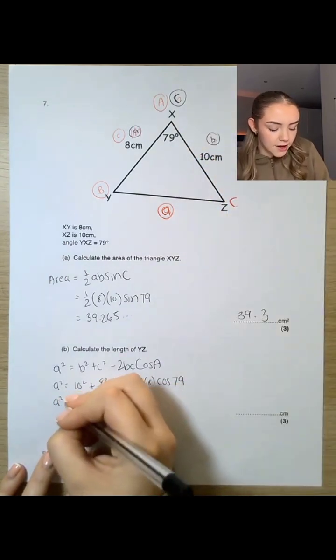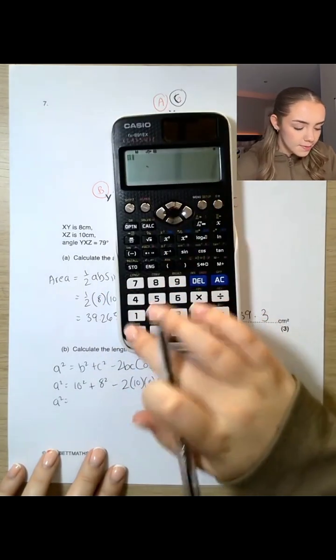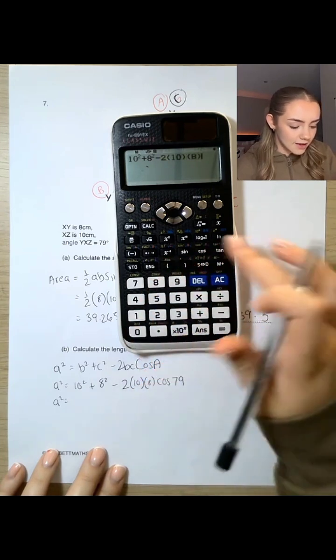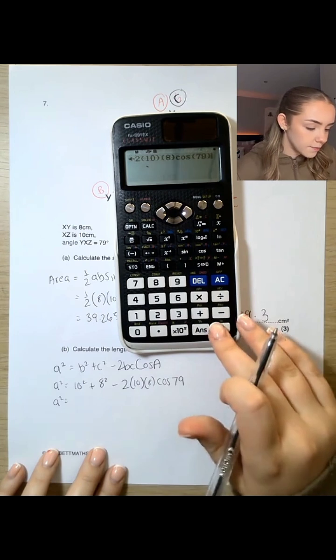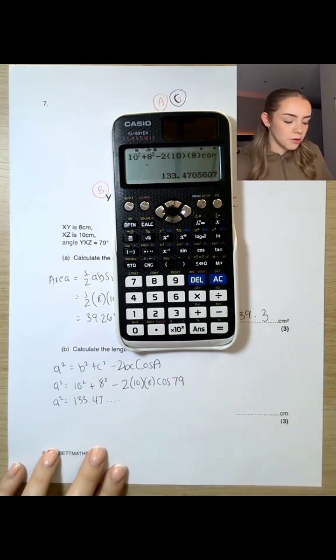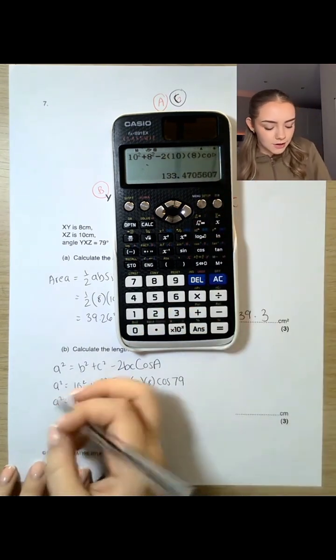That will get us an answer for a squared. So type all that in. So 10² + 8², take away 2 times 10 times 8 times cos 79, is 133.47. So I'm going to keep that number in my calculator. I'm not going to round it just yet.